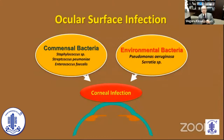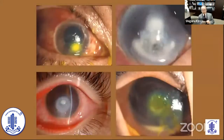When thinking about ocular surface infection, I divide it into two major categories: one is commensal bacteria, including Staphylococcus species, Streptococcus, and Enterococcus faecalis; the other group is environmental bacteria such as Pseudomonas aeruginosa and Serratia species. These two groups cause the major corneal infections.